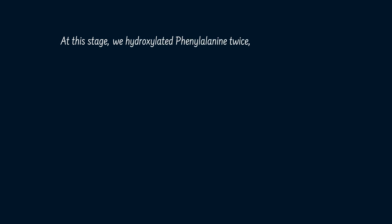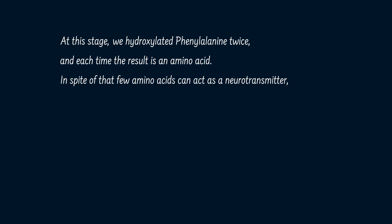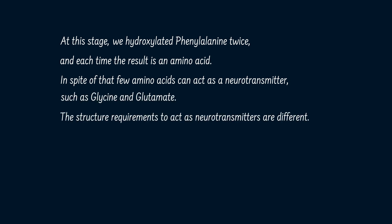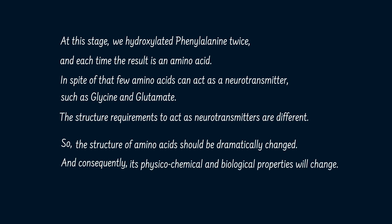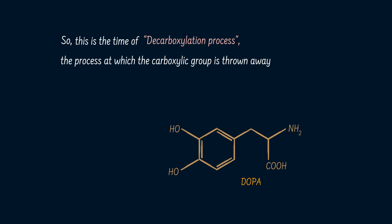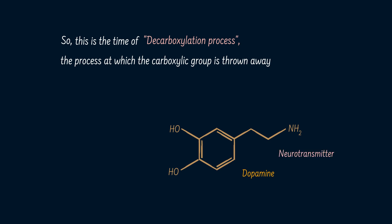At this stage, we have hydroxylated phenylalanine twice, and each time the result is an amino acid. In spite of the fact that a few amino acids can act as neurotransmitters — such as glycine and glutamate — the structural requirements to act as neurotransmitters are different. So the structure of amino acids should be dramatically changed, and consequently its physico-chemical and biological properties will change. This is the time of the decarboxylation process — the process at which the carboxylic group is thrown away. The decarboxylation process converts dopa to dopamine. It is no longer an amino acid because the acid group is gone; now it is an amine, a biogenic neurotransmitter amine.